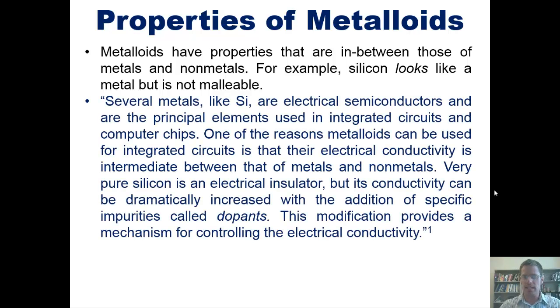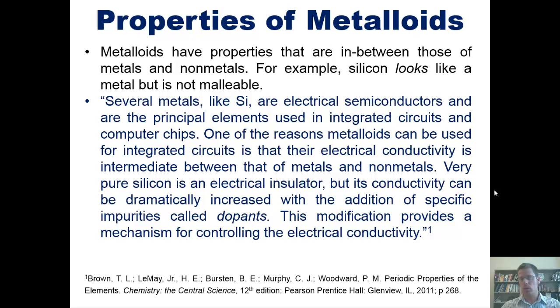According to our text, several metals, like Si, are electrical semiconductors and are the principal elements used in integrated circuits and computer chips. One of the reasons metalloids can be used for integrated circuits is that their electrical conductivity is intermediate, or somewhere in-between that of metals and nonmetals. Metals conduct electricity. Nonmetals do not conduct electricity. So metalloids traverse that realm in-between, which allows them to be semiconductors. Very pure silicon is an electrical insulator, but its conductivity can be dramatically increased by adding specific impurities called dopants. This modification provides a mechanism for controlling electrical conductivity in circuits.